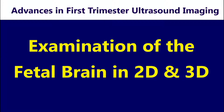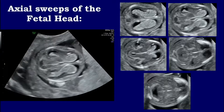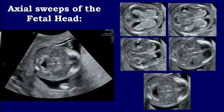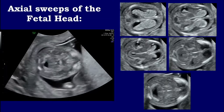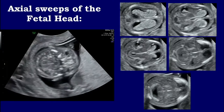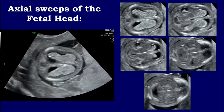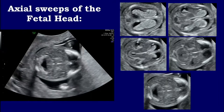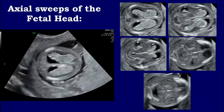I will demonstrate how useful it could be. First, let's go back to our traditional 2D imaging. We can take the sweeps or still images in one plane. Here you can see the axial sweep of the fetal head at about 13 weeks of pregnancy, and you can see that multiple views can be obtained from that sweep, containing a lot of information.